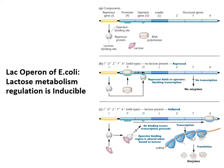With the lac operon, before going into the details, it's easier to use logic first. You have an operon that makes enzymes to break down lactose. If there's no lactose present, why would you want to waste resources making those enzymes? Whereas if lactose is present, you're going to want the enzymes to break it down and use it. So that tells you that lactose is an inducer for this operon.